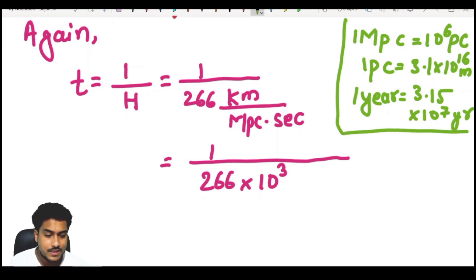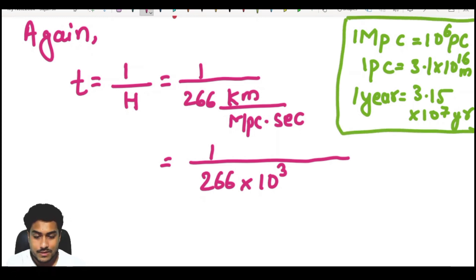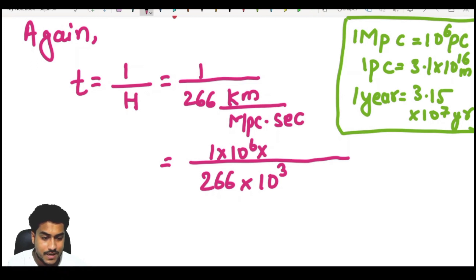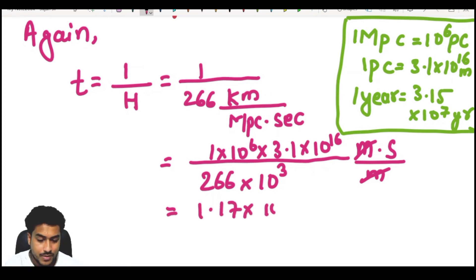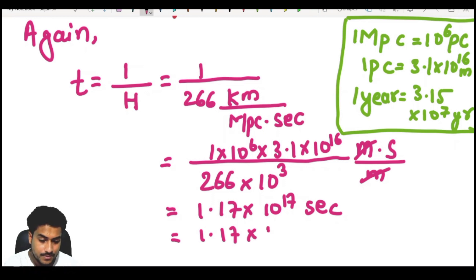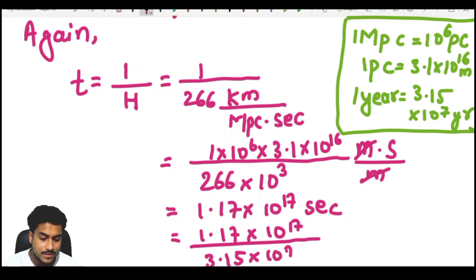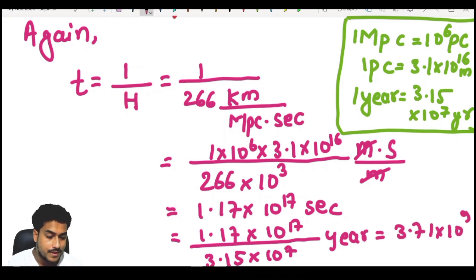We need these three constants in our calculation. Megaparsec is converted into parsecs times 10 to the power 6, and parsec is converted into 3.1 into 10 to the power 16 meters. So we cancel meters, and we get the value 1.17 into 10 to the power 17 seconds. When we divide 1.17 into 10 to the power 17 seconds by 3.15 into 10 to the power 7, it is converted into years, giving approximately 3.71 into 10 to the power 9 years.